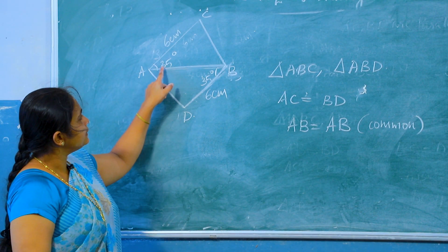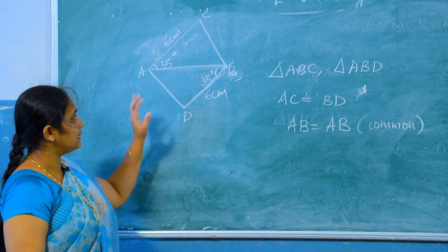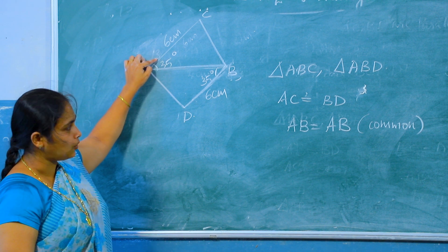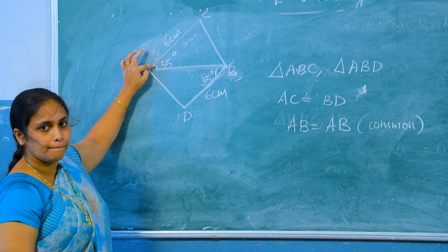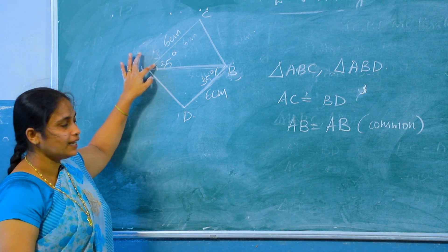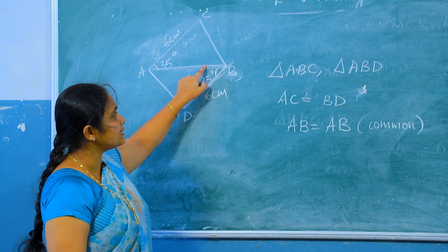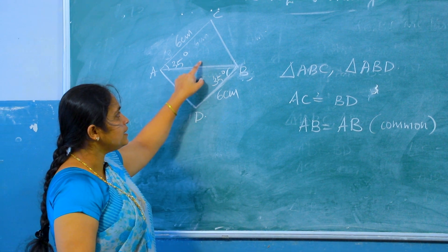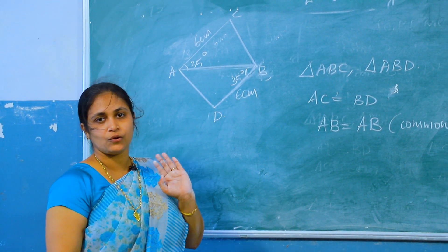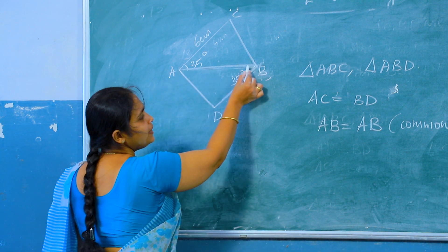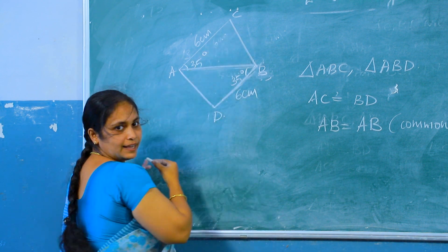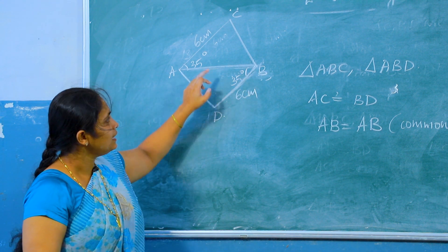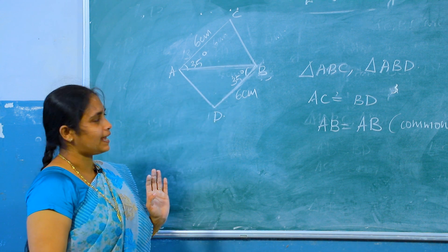These angles are also given: in these two triangles, these two sides are equal and the angle between them is equal to 35 degrees. And in this triangle, these two sides are equal and the angle between them is also 35 degrees. Therefore, these two triangles are congruent triangles.